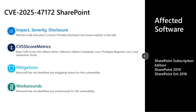The third vulnerability I'll cover today is CVE-2025-47172. This is a critical remote code execution vulnerability. It was privately disclosed to Microsoft, with no known exploits in the wild. It has a base CVSS score of 8.8. The attack vector is over the network, attack complexity is low, low privileges are required, and no user interaction is required to leverage this vulnerability. There are no documented mitigations or workarounds. Affected software is Microsoft SharePoint Server Subscription Edition, Microsoft SharePoint Server 2019, and SharePoint Enterprise Server 2016.